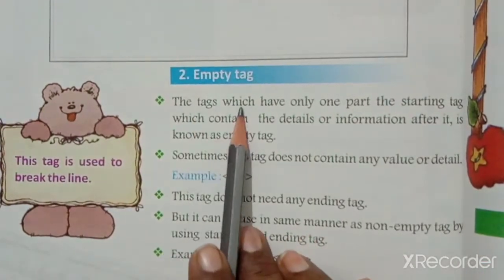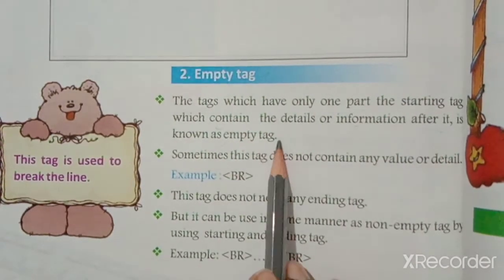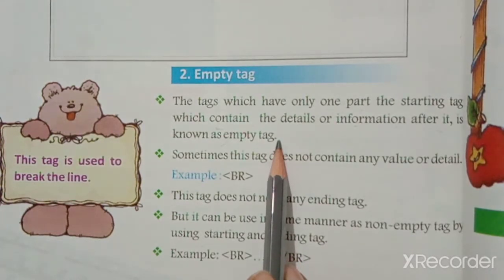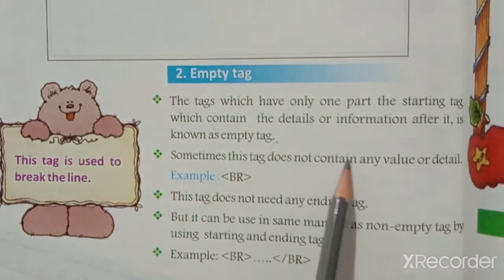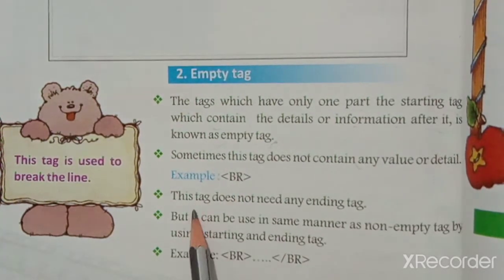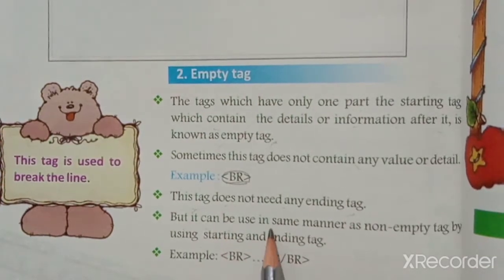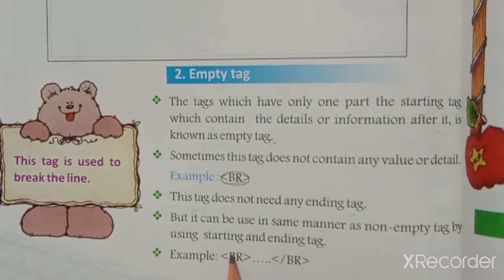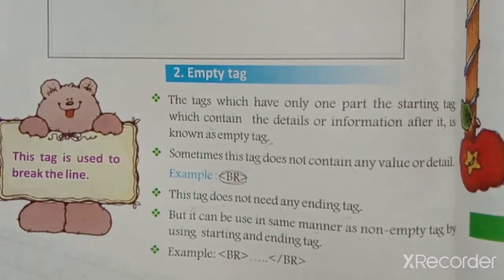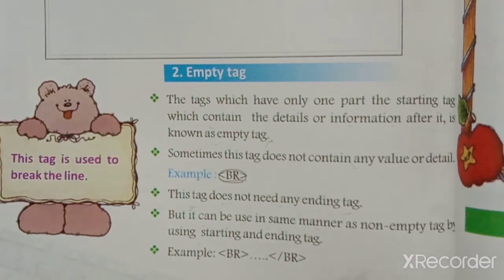Tags which have only one part — a starting tag which contains the detail of information after it — are known as empty tags. This tag does not need any ending tag, but it can be used in the same manner as a non-empty tag by using starting and ending tags.